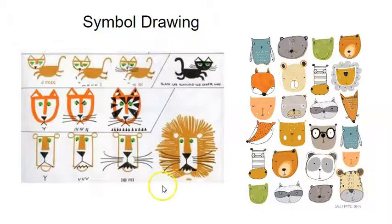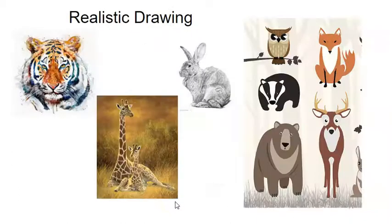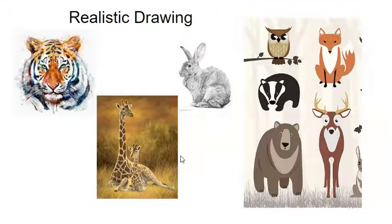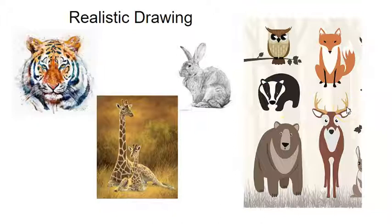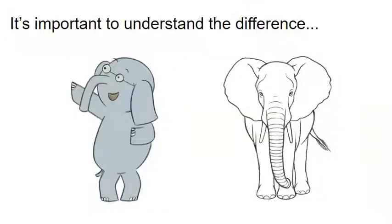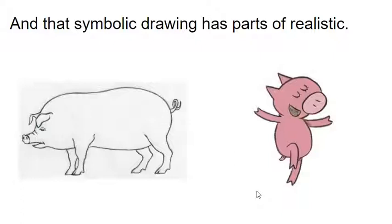These are all symbolic drawings. Likewise, these over here are more realistic — they almost look like a photograph but they are done with art, with painting or pencil. These are kind of in between realistic and symbolic; they're more realistic but still a little bit symbolic. It's important to understand the difference. Which one's this? Symbolic. Realistic. But they are both elephants.